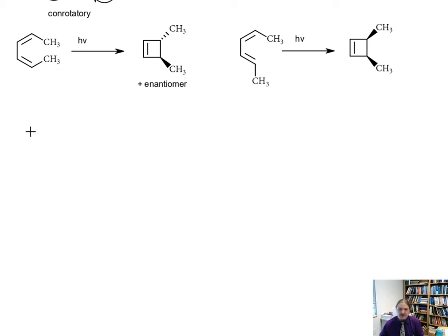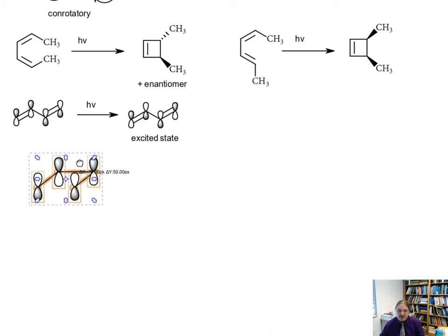Here is the HOMO of 1,3-butadiene. When you irradiate this with UV light we're exciting an electron from the ground state, we're exciting the molecule from the ground state to the excited state. We have an electron in what used to be the LUMO of the ground state but is now the HOMO of the excited state. That means the orbitals that we are working with look like these.